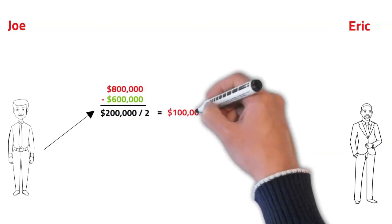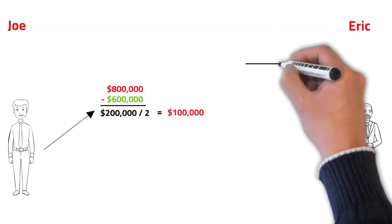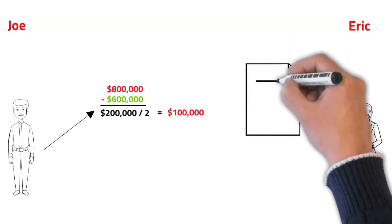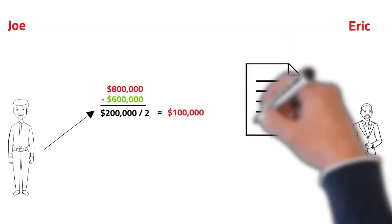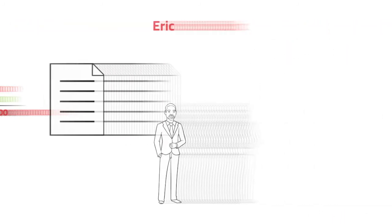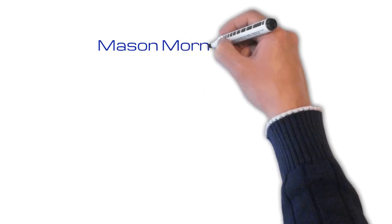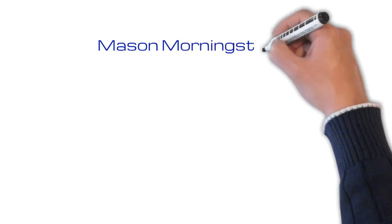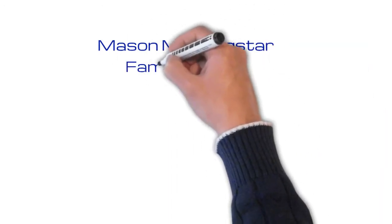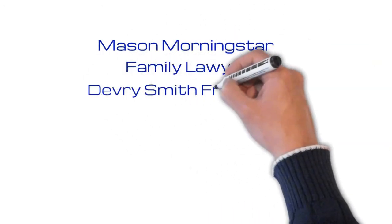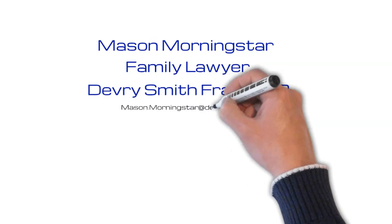And how could Joe have prevented this? The short answer is a marriage contract, or what we often call a prenup. As always, it's crucial to speak to a knowledgeable family lawyer who can give you advice on the specifics of your case.